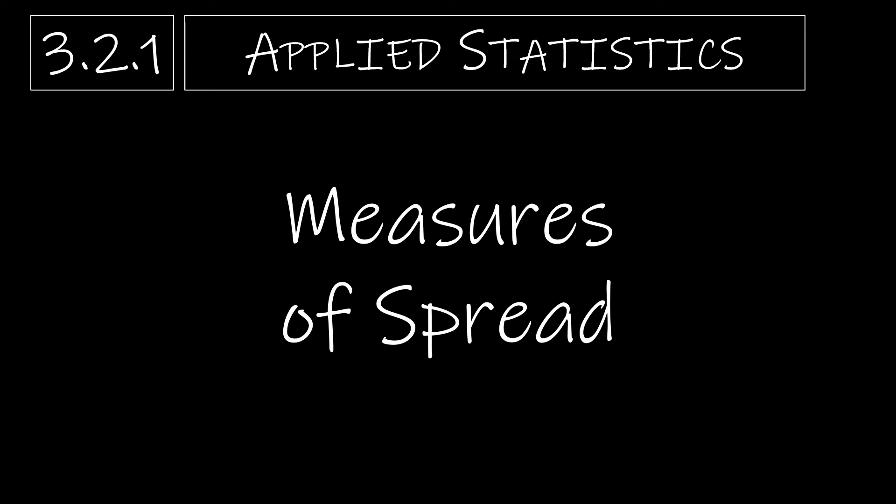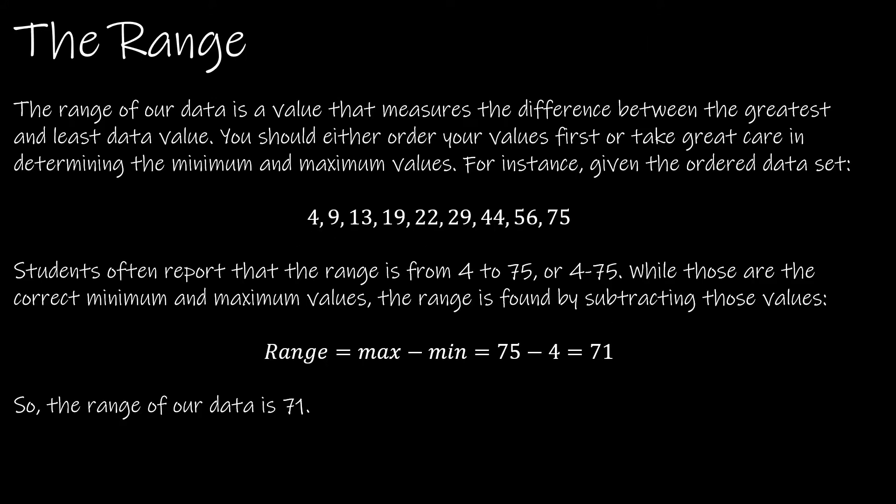This is section 3.2, measures of spread or dispersion — essentially we're looking at how spread out our data are. One of the ways that we can measure the spread of our data is the range.